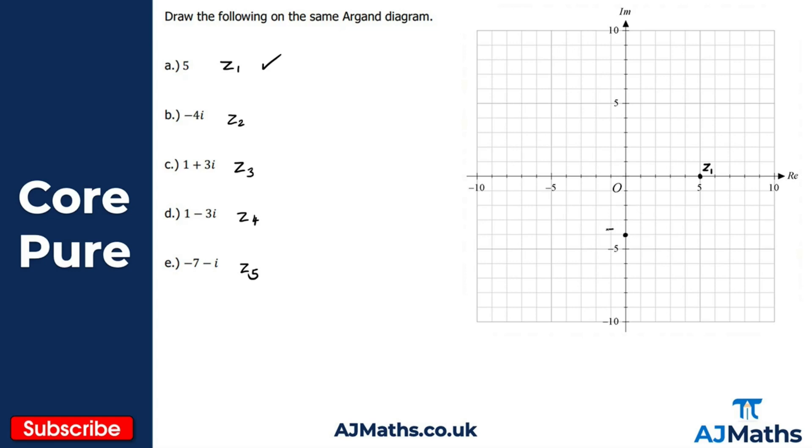Now we've got one plus 3i, so we go one unit along in the real sense on the real axis, and then we go up three units for the imaginary: one, two, three. We get our point there, so that's z3.